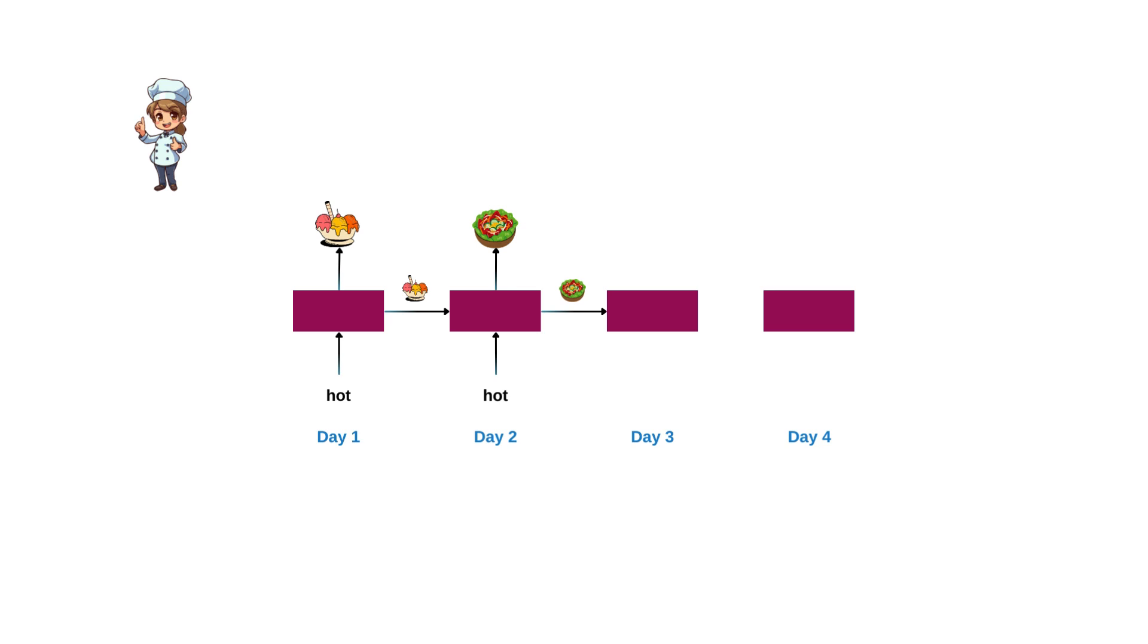The RNN learns from this sequence of events, capturing the correlation between weather conditions, past meals and the current cooking decisions. The next day, the weather is cold, so we make a tomato soup. And this goes on.